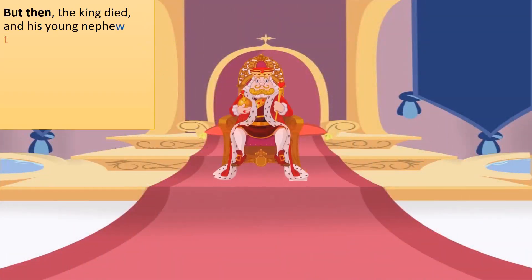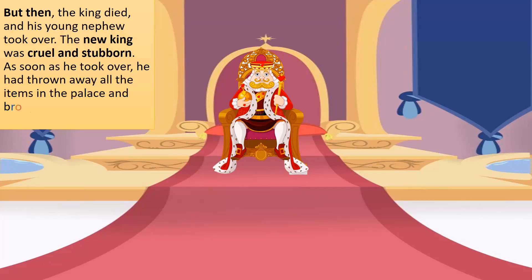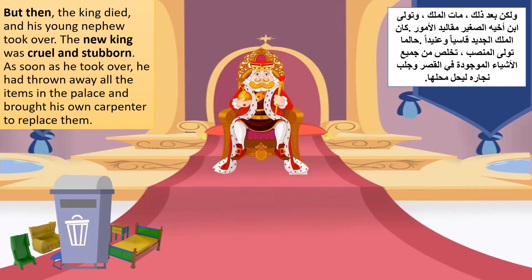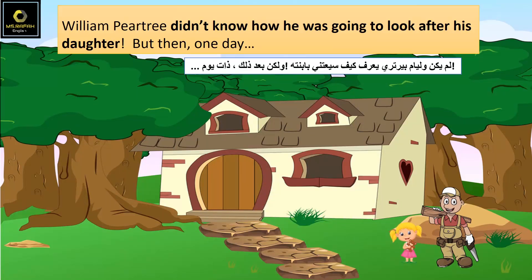But then, the king died and his young nephew took over. The new king was cruel and stubborn. As soon as he took over, he had thrown away all the items in the palace and brought his own carpenter to replace them. William Peartree didn't know how he was going to look after his daughter. But then, one day…